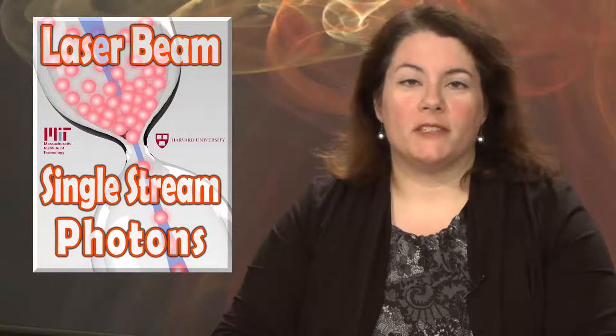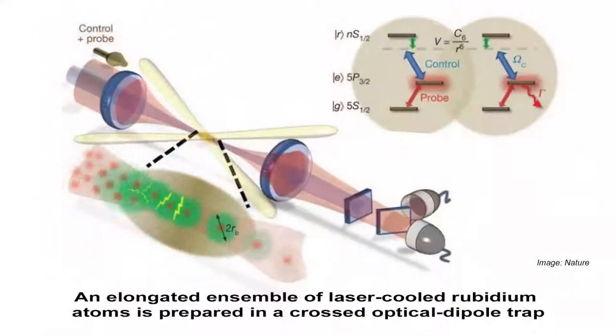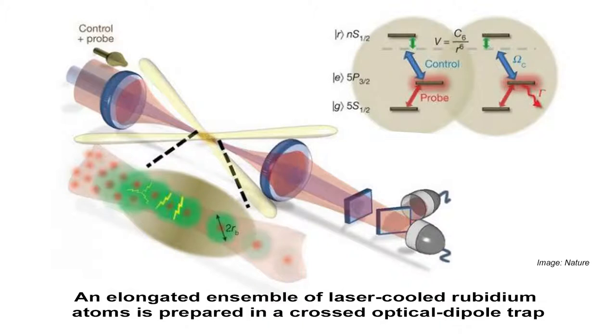In a significant step toward the development of quantum systems, scientists at MIT and Harvard have identified a method that converts laser beams into streams of single photons in a controlled way. It is difficult to control photons because the interaction between two is very weak at best. Encouraging such interactions requires atoms that interact strongly with photons, as well as with other atoms that, in turn, can affect other photons.